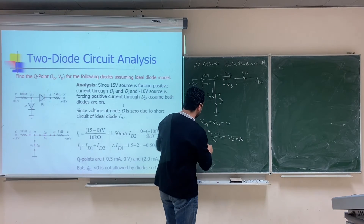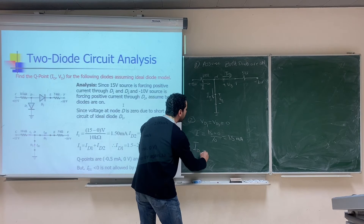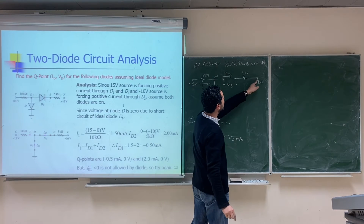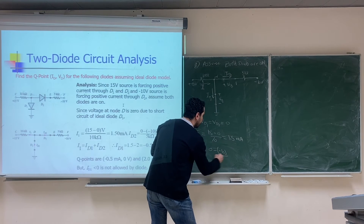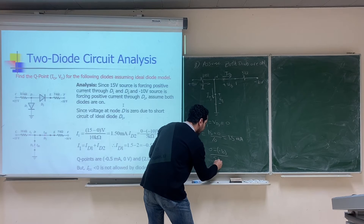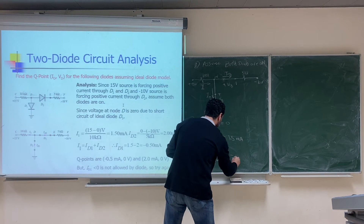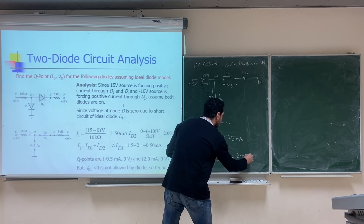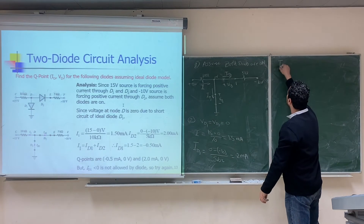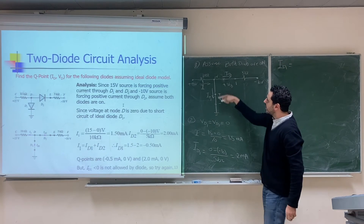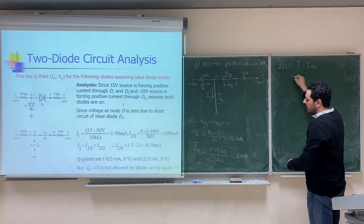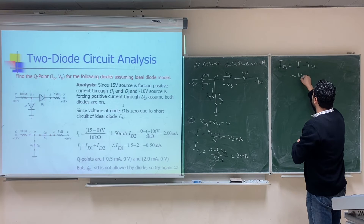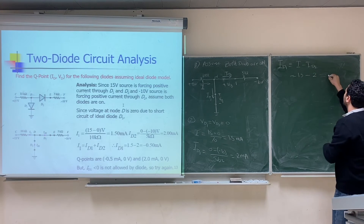Next, calculate I_D2: the voltage at node E is 0V (D1 short to ground), so I_D2 = (0 − (−10)) / 5kΩ = 10 / 5k = 2 milliampere. Then by KCL: I_D1 = I − I_D2 = 1.5mA − 2mA = −0.5 milliampere.